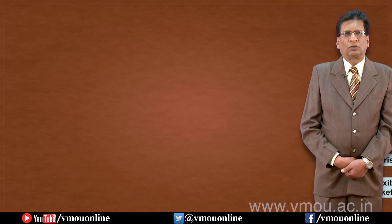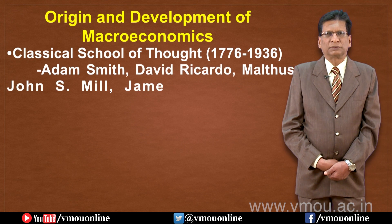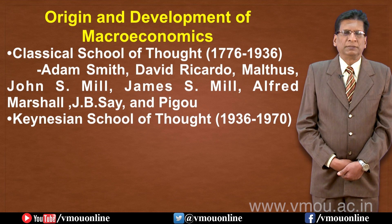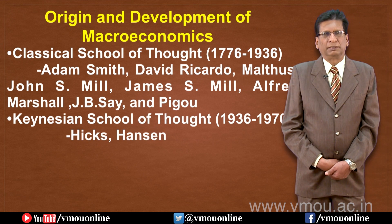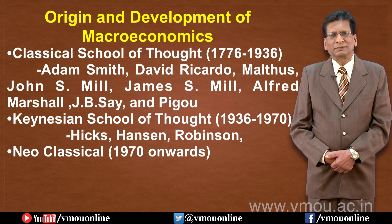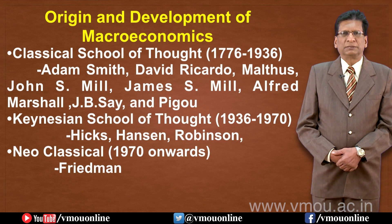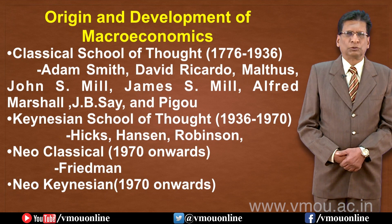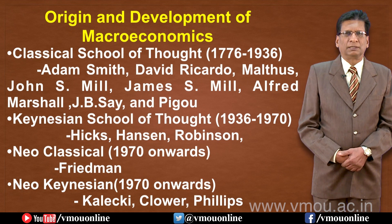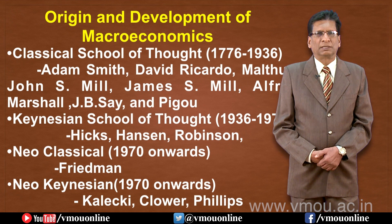The Classical School of Thought refers to all economic theories published before 1936. Key economists include Adam Smith, David Ricardo, Malthus, John Mill, James Mill, Alfred Marshall, J.B. Say, and Pigou. The Keynesian period from 1937 to 1970 includes contributions from Hicks, Hansen, and Robinson.